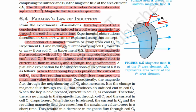When we move the magnet, the magnetic flux through the coil changes. In the experiments, the motion of a magnet towards or away from the coil, or moving a current-carrying coil C2 towards or away from coil C1, changes the magnetic flux associated with coil C1.